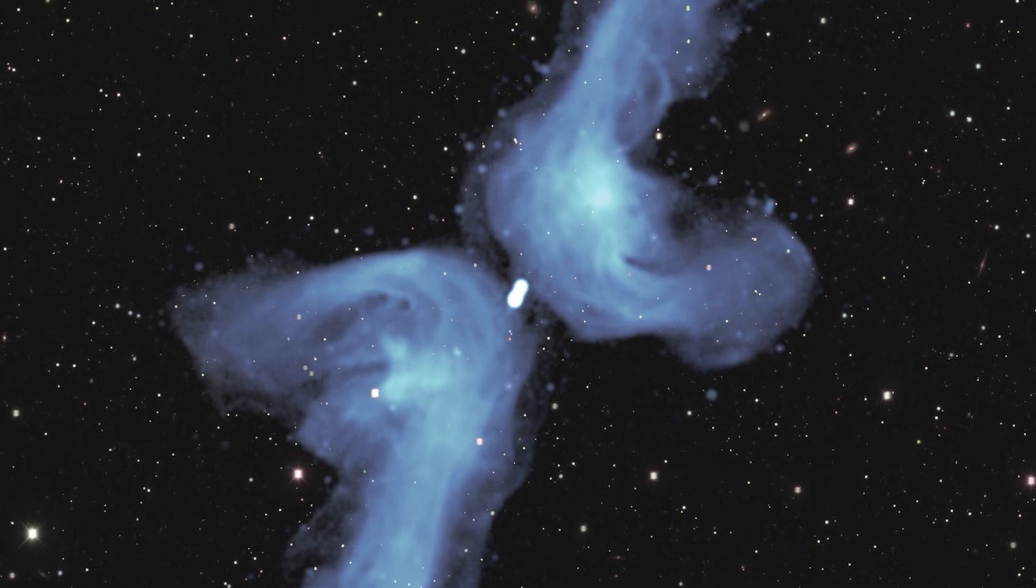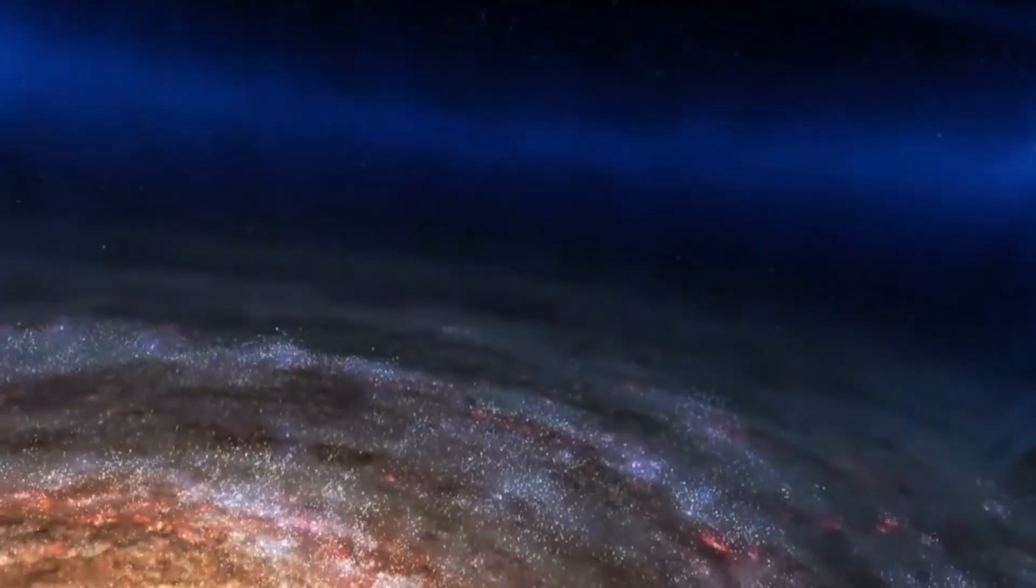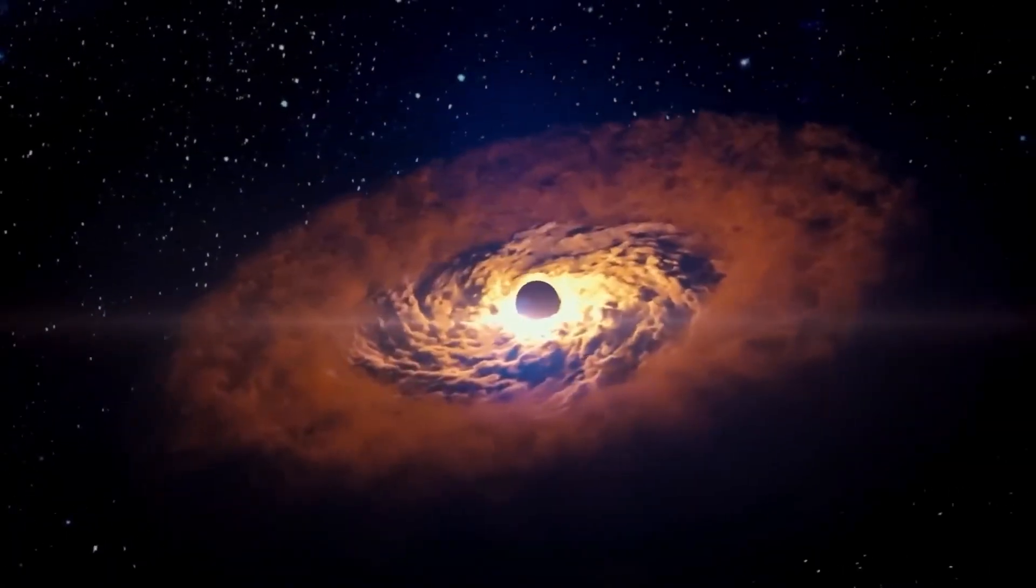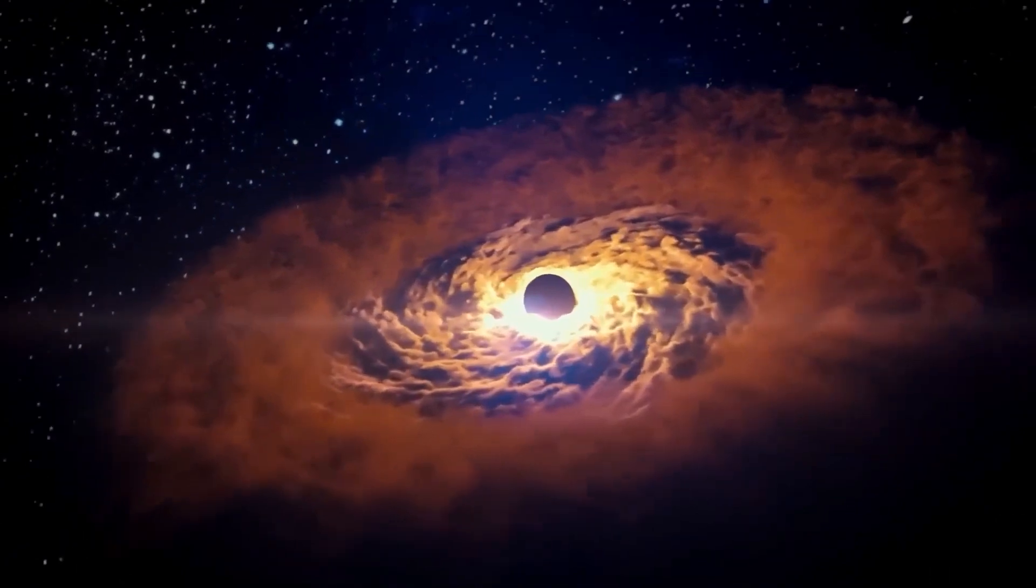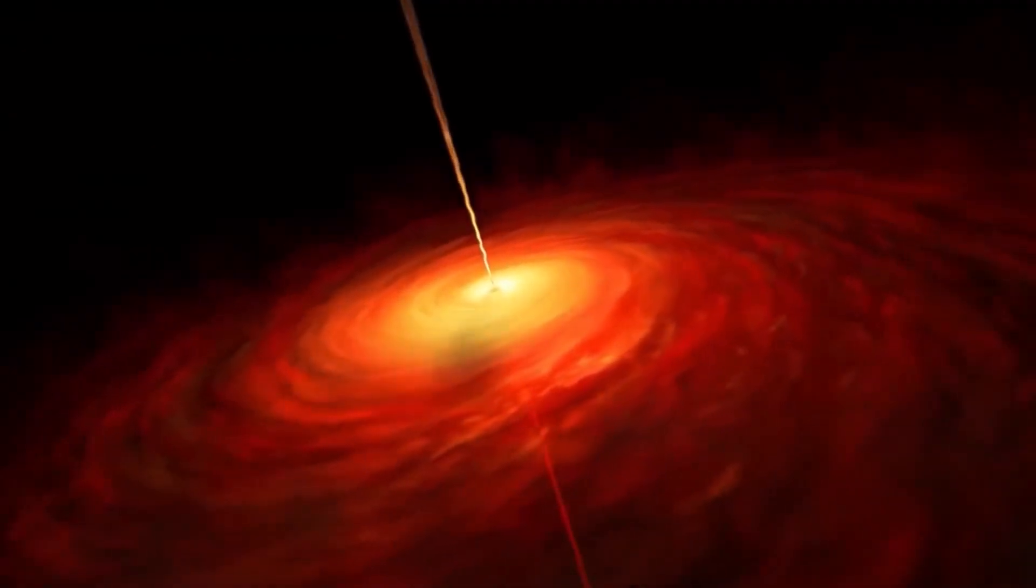There's a special type of galaxy called an X-shaped or winged radio galaxy. These galactic superheroes have two pairs of jets that form an X-shape when seen from our point of view. But hold on, the galaxy we're talking about, as we named it earlier, the PBC doesn't have this X-shape. Why?